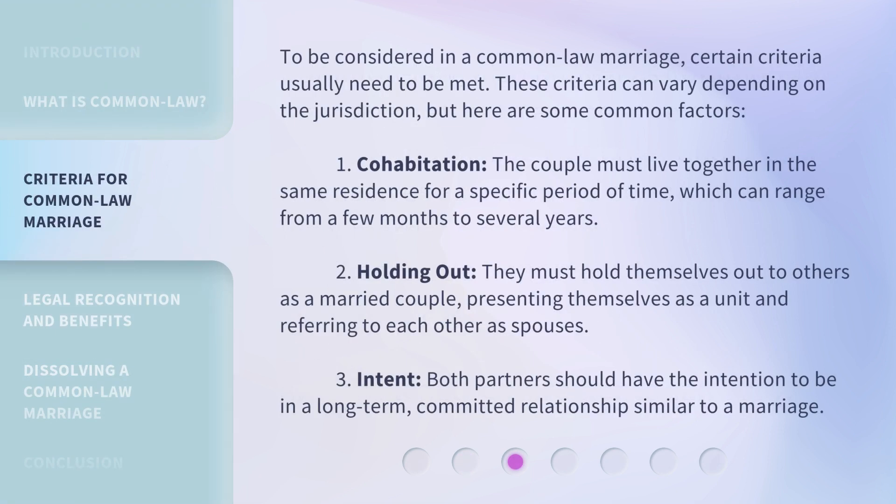To be considered in a common law marriage, certain criteria usually need to be met. These criteria can vary depending on the jurisdiction, but here are some common factors. First, cohabitation: the couple must live together in the same residence for a specific period of time, which can range from a few months to several years.